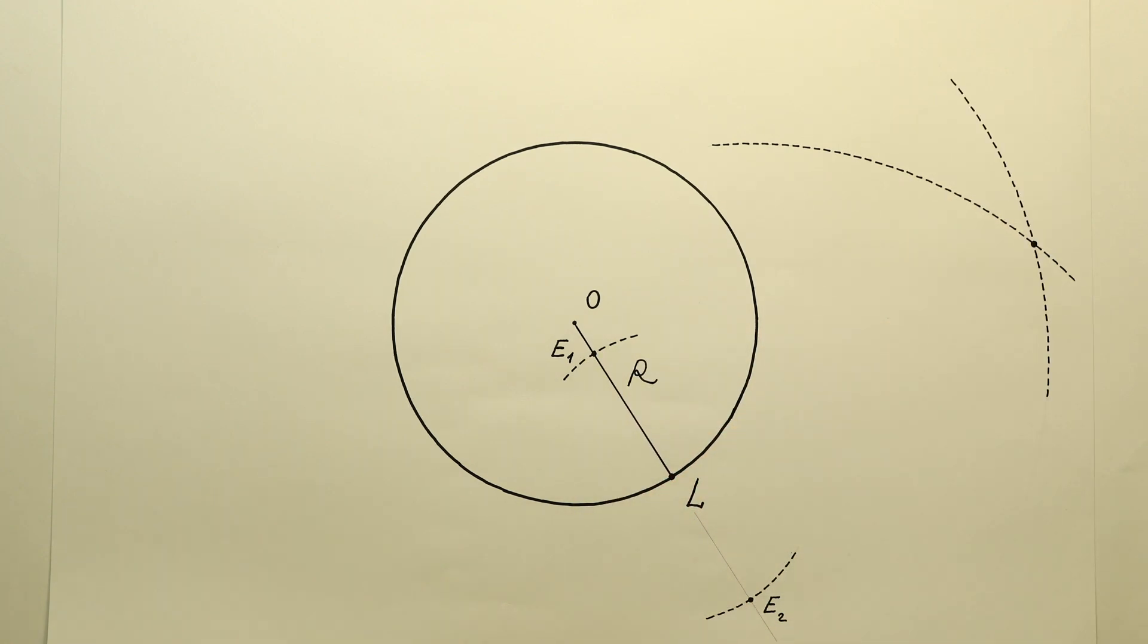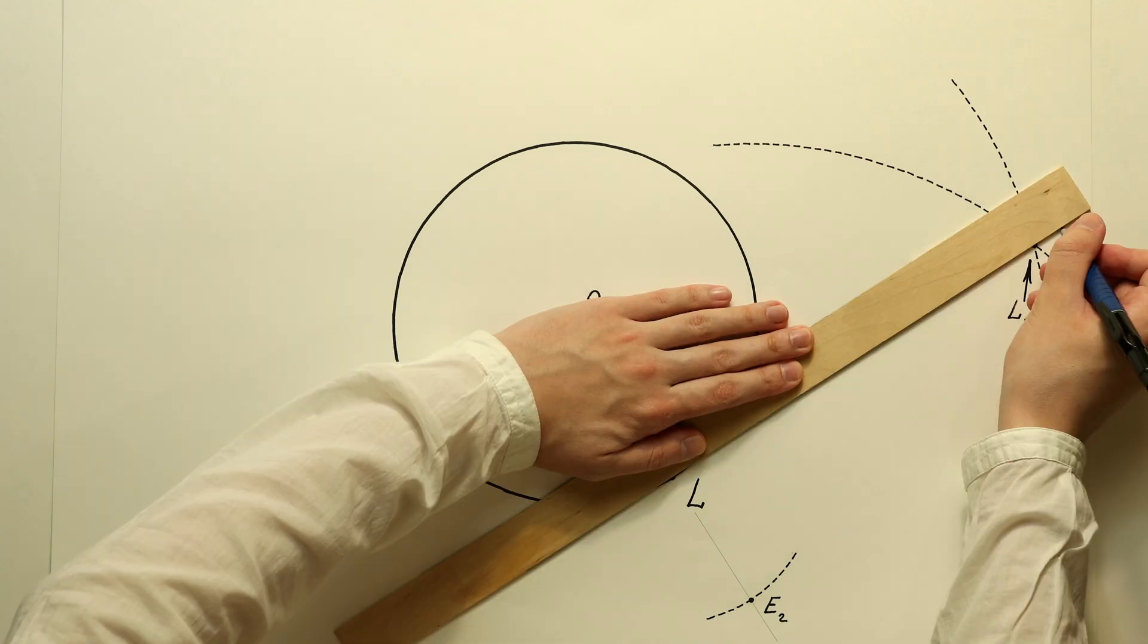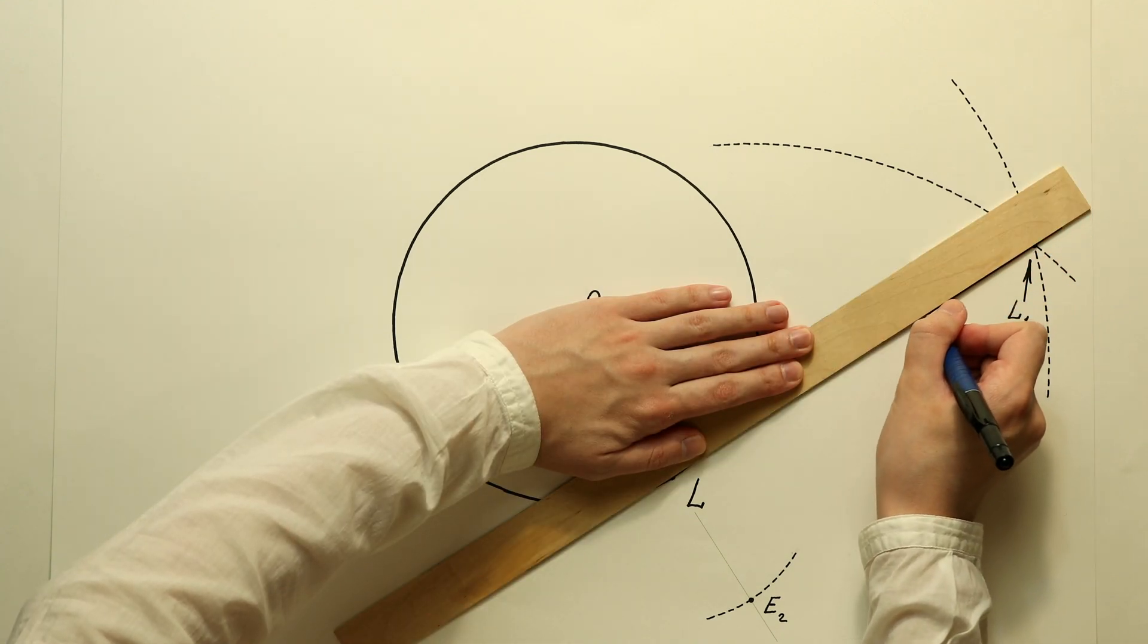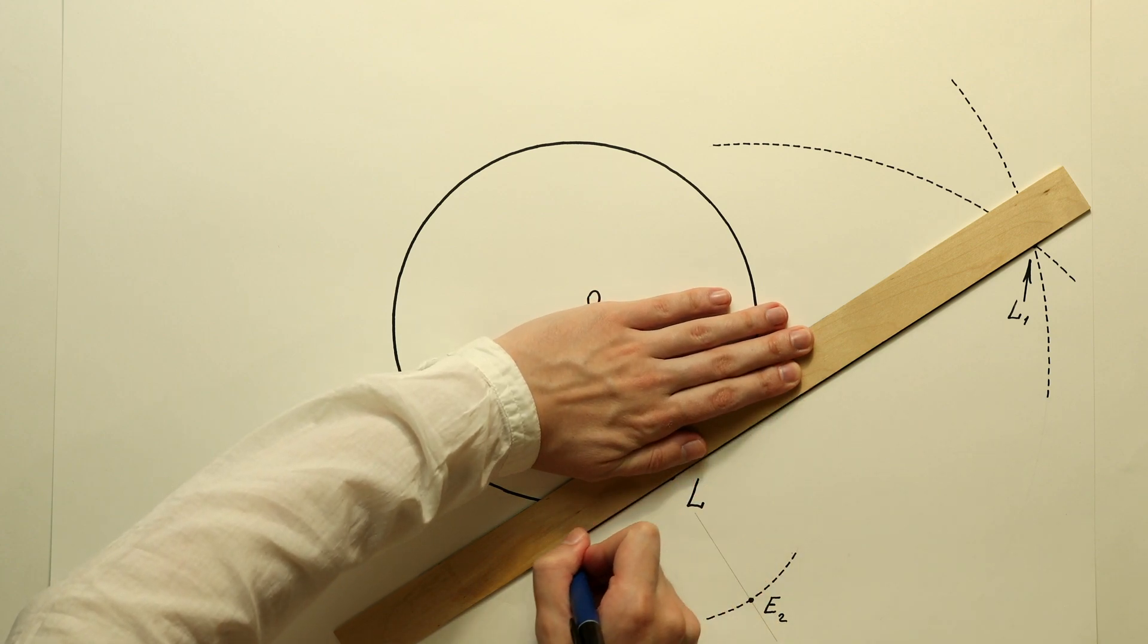I will give this intersection point the name of point L1. A tangent line to a circle passes through point L1 and point L.